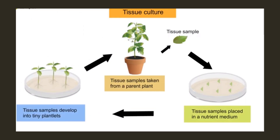Look at this slide. Here we will show you the steps on how to do tissue culture. Firstly, a tissue sample is taken from a parent plant. This is the tissue sample. Next, the tissue is put into the nutrient medium — the nutrient medium here is in the petri dish. Next, the tissue will be developed into tiny plants.